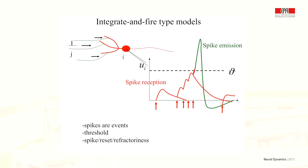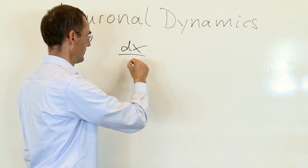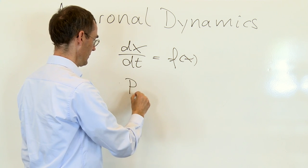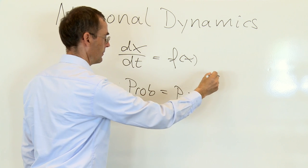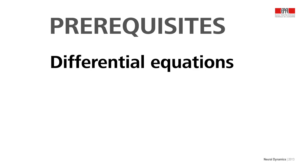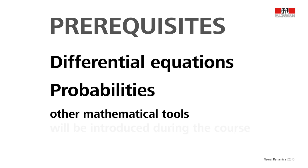I will use slides for teaching, but I will occasionally switch to the whiteboard in order to write down mathematical formulas like differential equations or probabilities. Sometimes I combine stochasticity with differential equations. These are the tools that we will need to describe the neuronal dynamics. You should have seen differential equations before and probabilities as well, but otherwise the mathematical tools will be introduced as we go along.